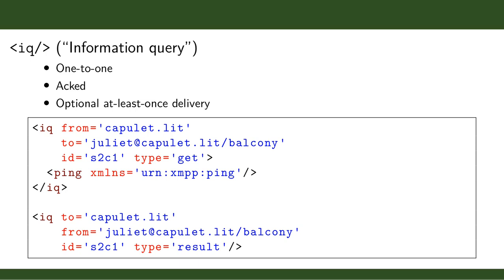IQ stands for Info/Query. Like messages, IQ stanzas are one-to-one — sent to a single recipient. However, unlike messages, IQ stanzas are acknowledged: the recipient always sends back either an error saying it didn't understand the payload, or a response to whatever was wrapped in that payload. This gives you optional at-least-once delivery — if you don't get a response within a certain time, you can retry. A common example is the ping extension, where you ask any address 'are you still there?' and receive a corresponding result.